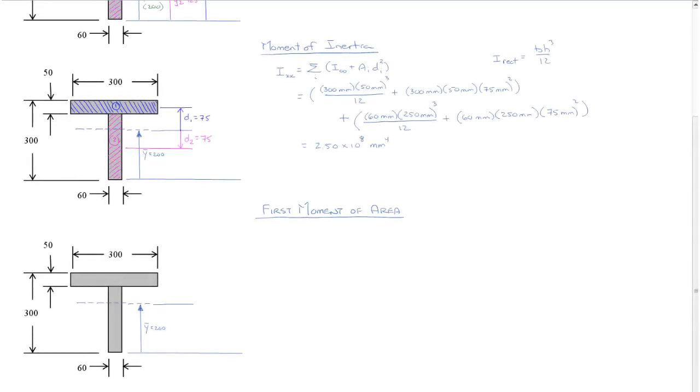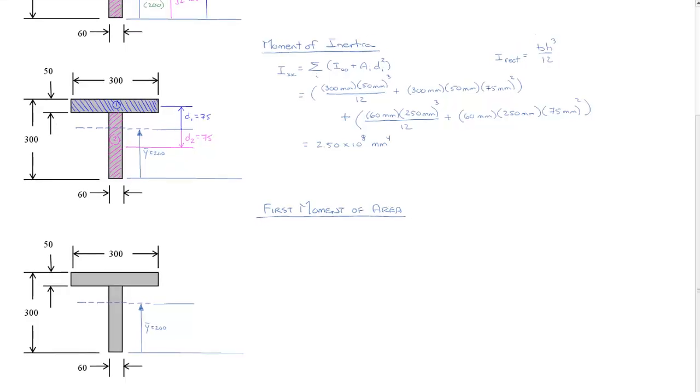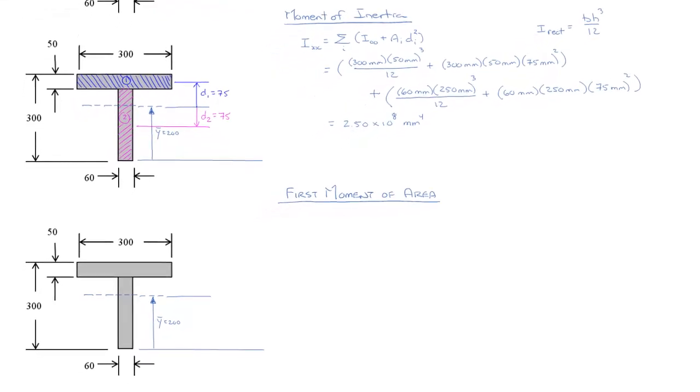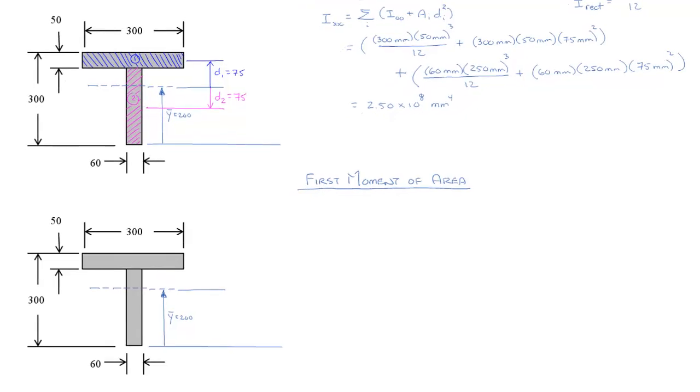We've set ourselves up to calculate the first moment of area. Once again, I've copied an instance of the cross-section down because we're going to be using different dimensions in different areas and I want to be able to leave the trail of what we've done. I wouldn't necessarily do this in a simple problem, but for being able to see what the differences are and making sure that we get rid of any confusion, it works in this instance.